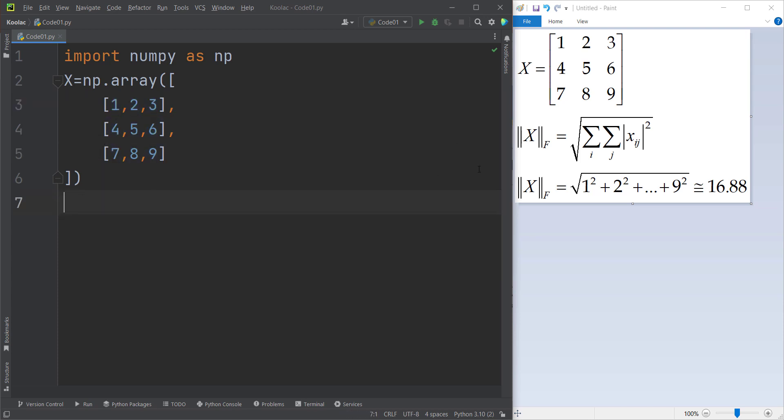So we want to calculate the Frobenius norm for this matrix. In order to do so, I simply type np.linalg, and remember that NumPy has different sections for different stuff, and one of those sections is the linear algebra section, which is used for dealing with linear algebra stuff.